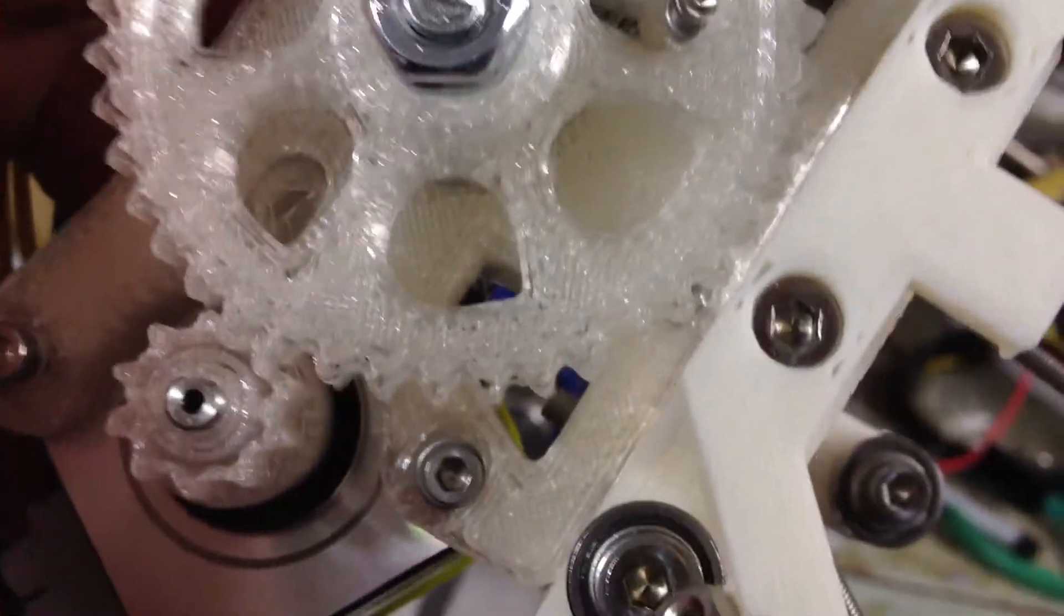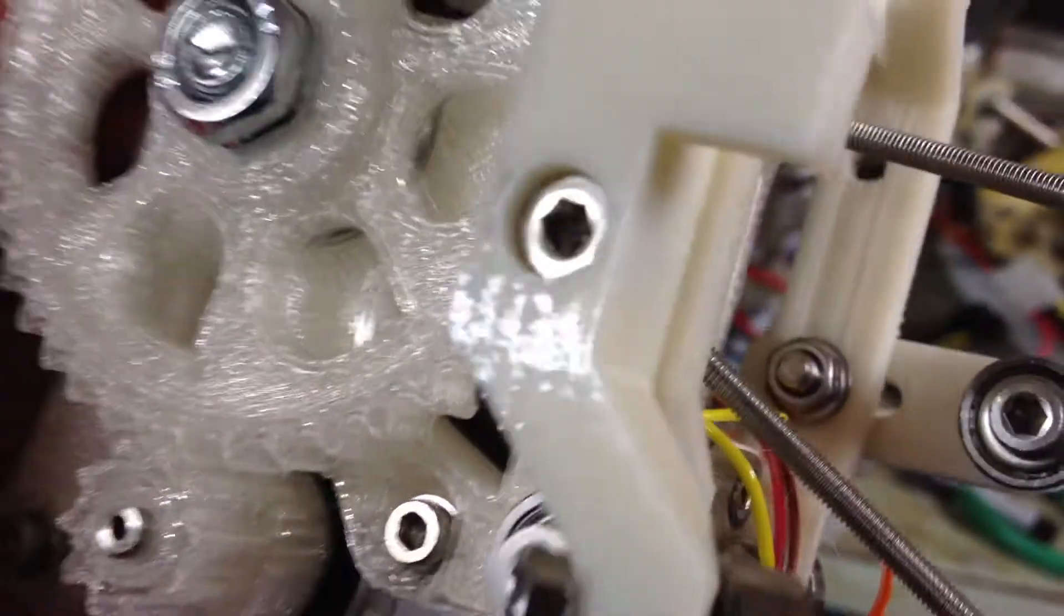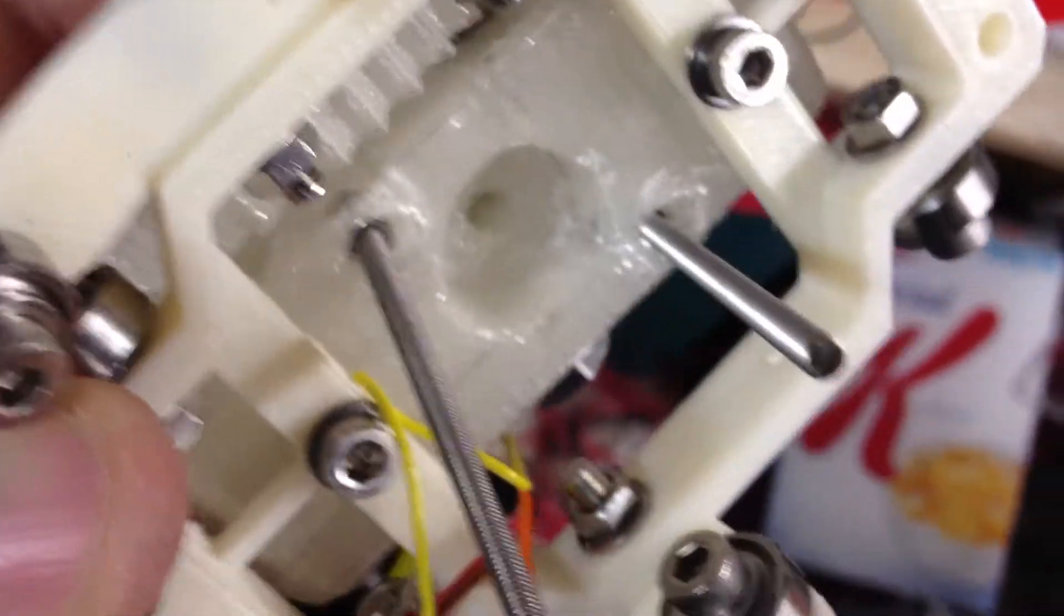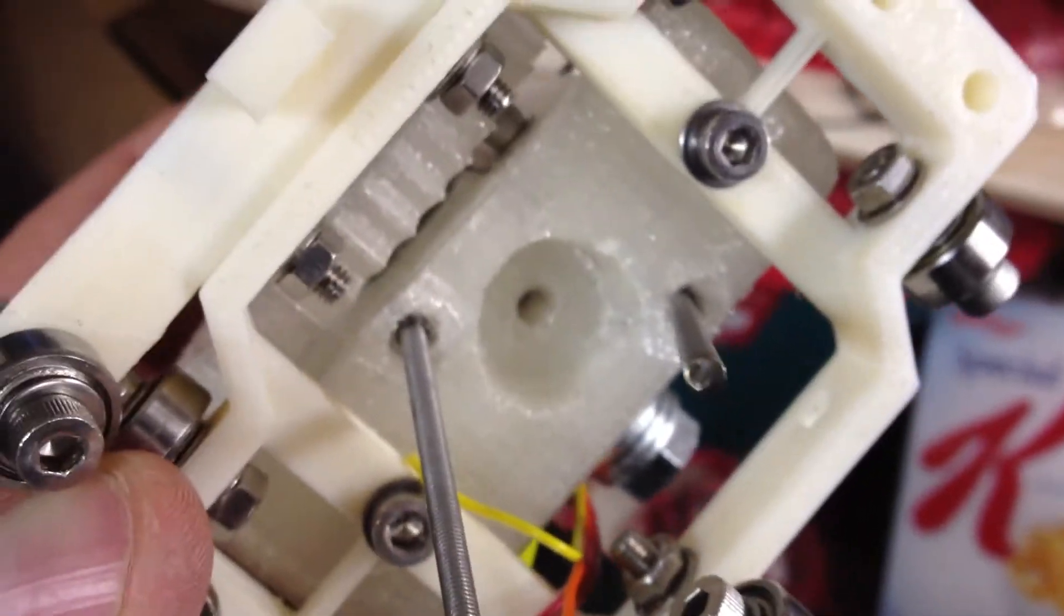I guess worst case I could drill holes through the sides for the traditional mounting mechanism and then use that to print out a new extruder, or I could print out a piece that goes below this that holds onto those strongly.